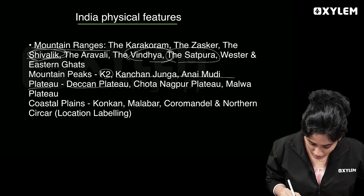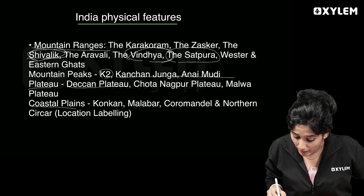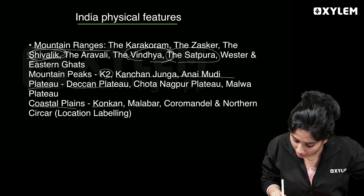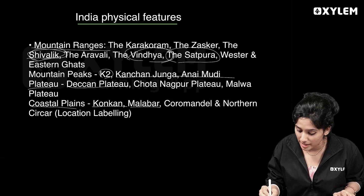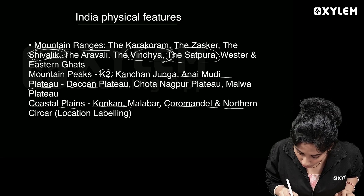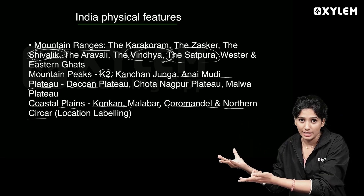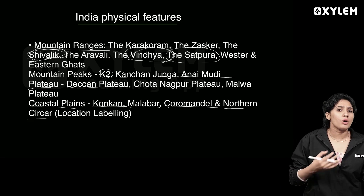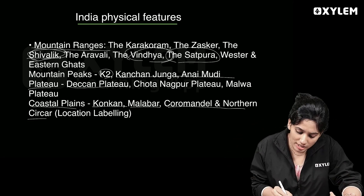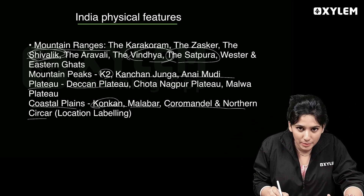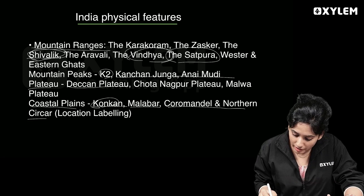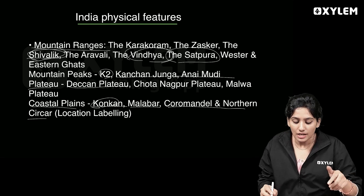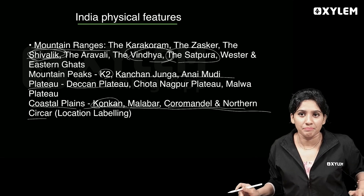Now, coastal plains: the Western coastal plains — including the Malabar coast, which runs through Kerala — and the Eastern coastal plains including Coromandel coast. The western plain is narrow and the eastern plain is a small plain.